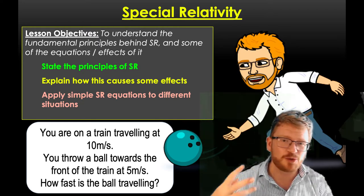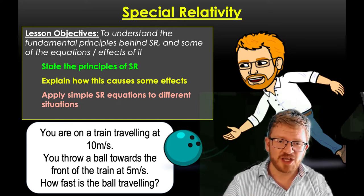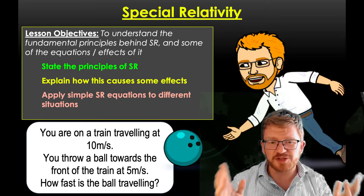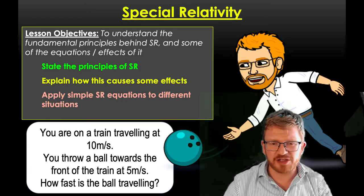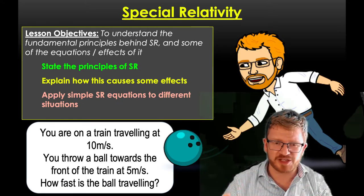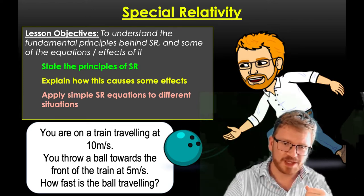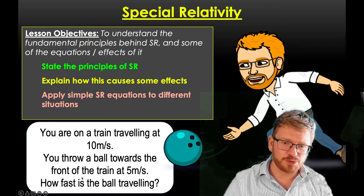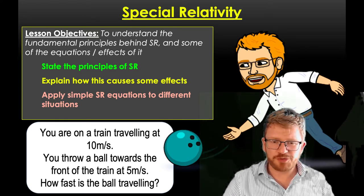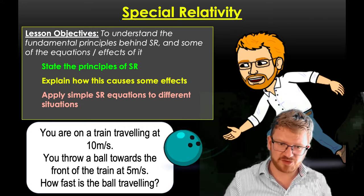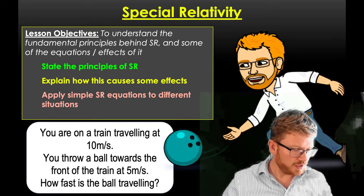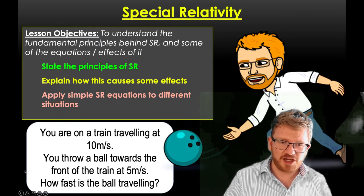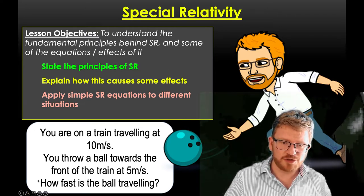I'll touch briefly on the equations and effects it produces, but mainly I'm going to be thinking about the weirdness of it. There's a question in front of you: you're on a train travelling at 10 metres per second, moving to the side. While on that train, you throw a ball towards the front of the train at 5 metres per second. The question — deceptively simple-sounding — is: how fast is that ball really travelling?